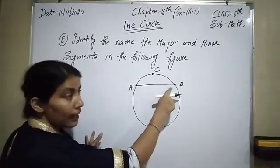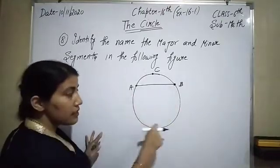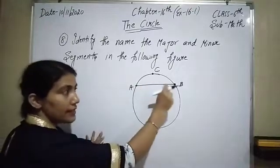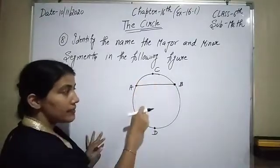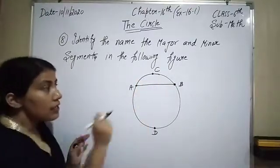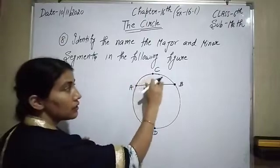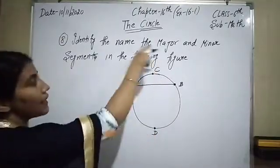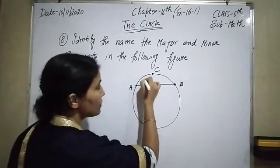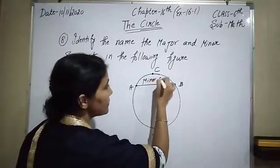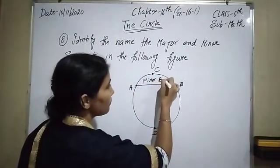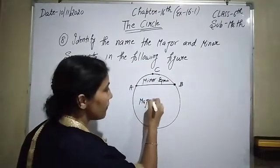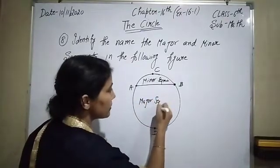Here is a line segment that divides the circle into two portions — two parts. The smaller part is called the minor segment, so this one is called the minor segment.